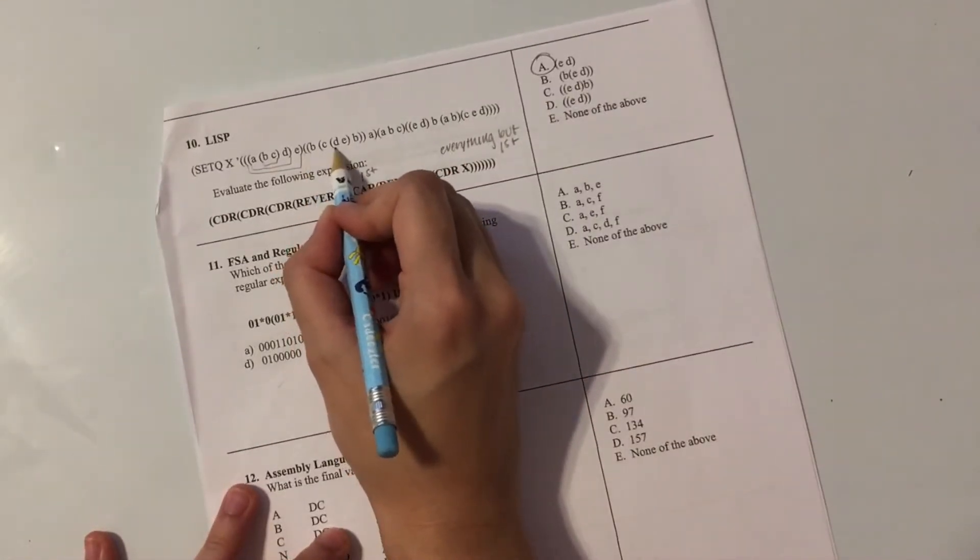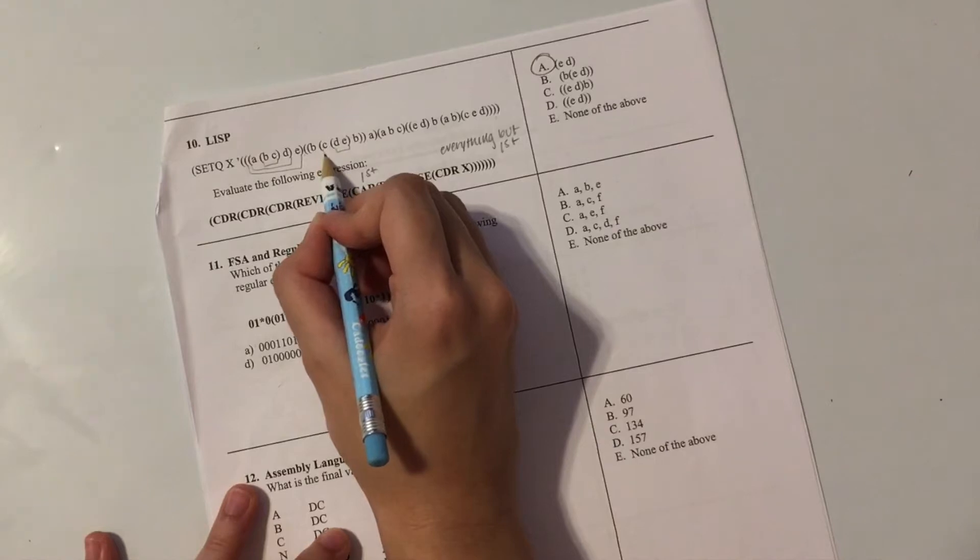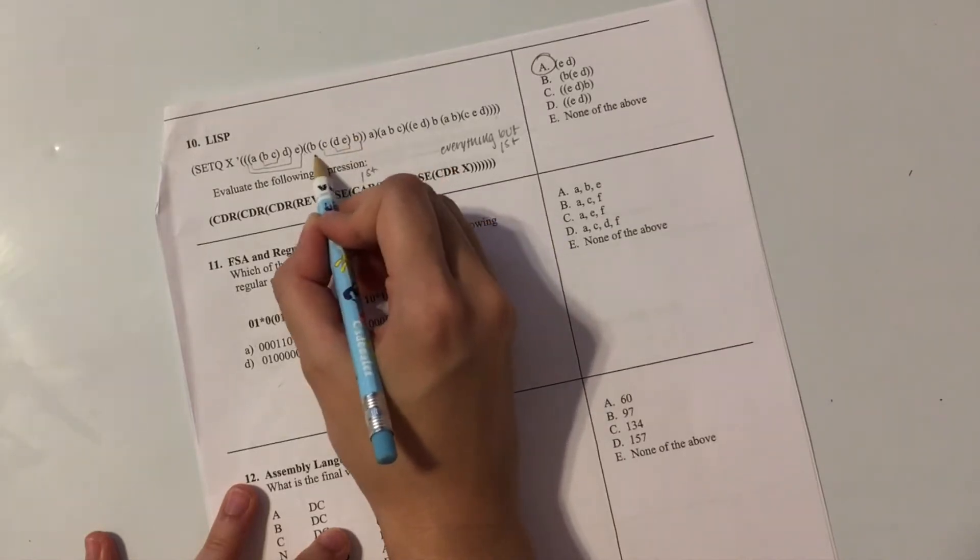Then the next set of parentheses. Okay, I see this DE is a list. And then C and B are the next set of parentheses that line up together.